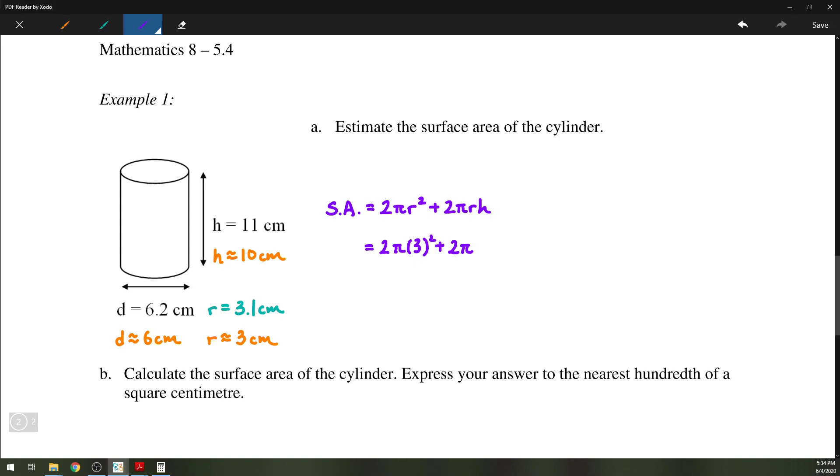Again, these are estimated radius and height. So the first part, 3 times 3 is, of course, 9, 9 times 2 is 18. So first term will be 18 pi and the second term will be 60 pi. So altogether, that is 78 pi.